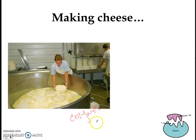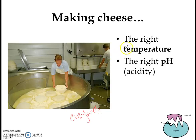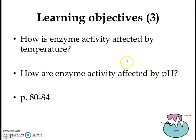In order to produce cheese of the right quality, you need the right temperature and also the right pH, or the right acidity. Get either of these wrong and the cheese turns out bad. So the enzymes involved in making cheese require the right conditions — temperature and pH — in order to function properly. For this lesson, we'll be looking at how enzymes like those involved in making cheese are affected by temperature and pH.